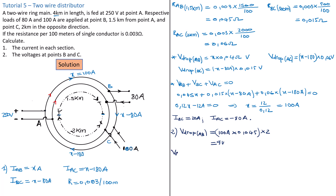VB will be 250 minus 9, which equals 241 V. So the voltage at point B is 241 volts.